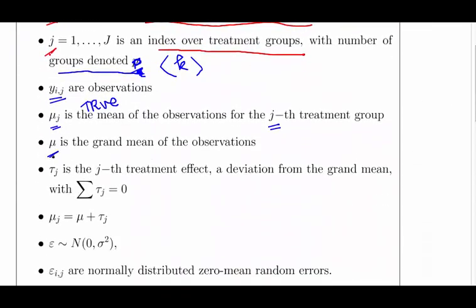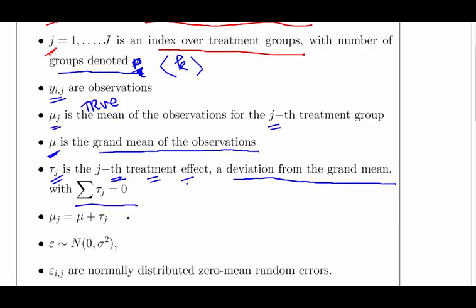Mu is the grand mean of all the observations. Tau j is the j-th treatment effect, which is a deviation from the grand mean for each treatment group. The sum of the treatment effects should equal zero — the sum of all three tau terms. This is sometimes referred to as a fixed effect.